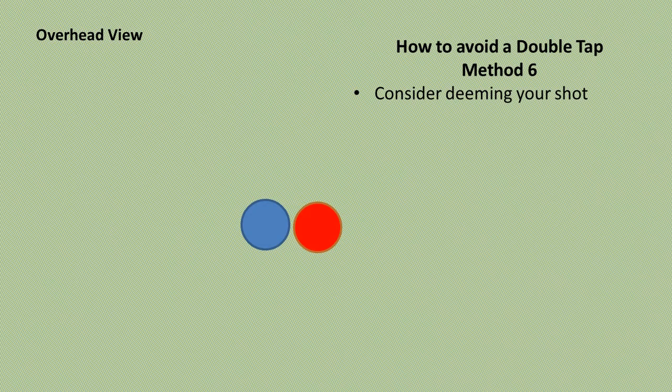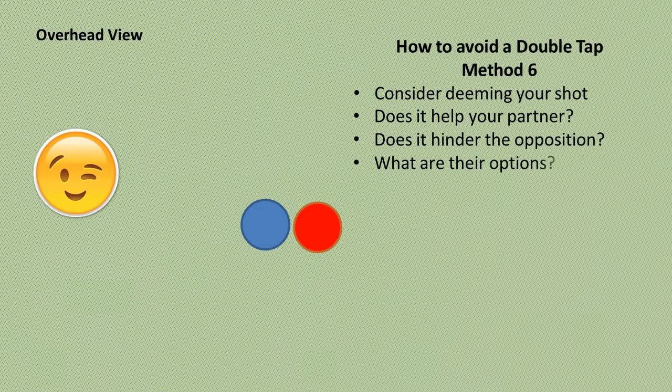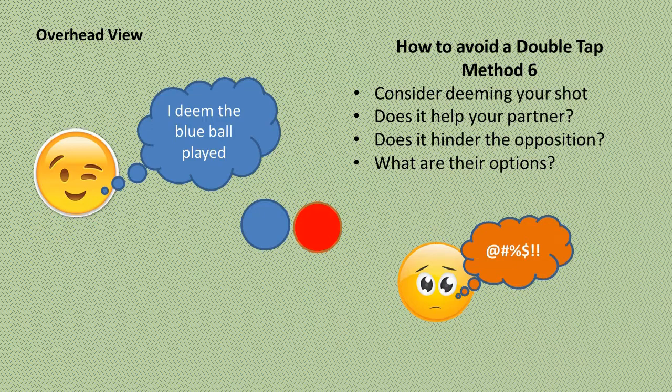Finally, consider deeming your shot. But first consider: does it help your partner, does it hinder the opposition, and what are the options for the opposition?